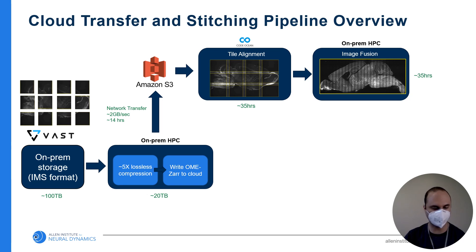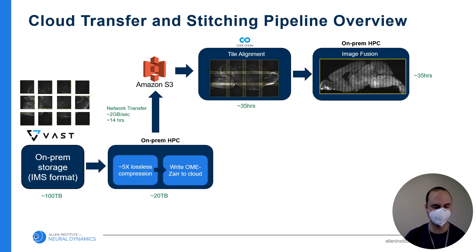The tile alignment step is run in a single virtual machine on the CodeOcean platform using BigStitcher. The fusion step is currently run on the on-premises compute cluster and uses BigStitcher Spark to distribute the work across multiple compute nodes. But in the final pipeline, the fusion step will also run fully in the cloud.